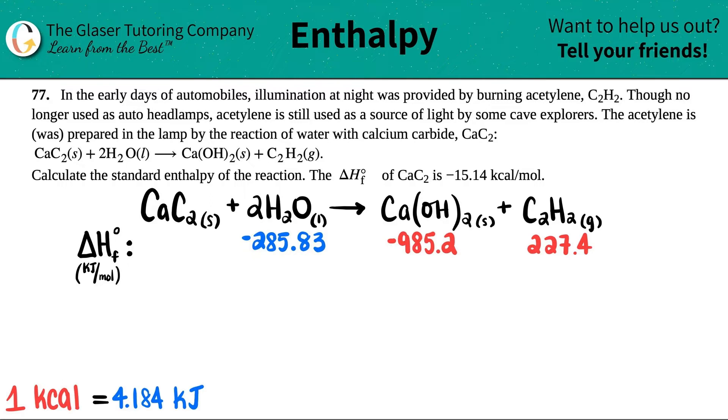Though no longer used as auto headlamps, acetylene is still used as a source of light by some cave explorers. The acetylene was prepared in the lamp by the reaction of water with calcium carbide, CAC2. So I wrote that reaction right over here. CAC2 solid plus 2H2O liquid yields Ca(OH)2 solid plus the acetylene, C2H2 gas.